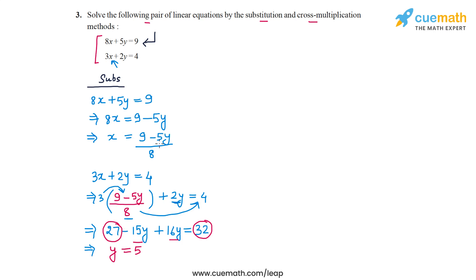Now that I have y equal to 5, I can substitute that into this expression for x, and that will give me the value of x. So what is x? So x will be equal to 9 minus 5y, 5y will be 25, so 9 minus 25 or minus 16 by 8, and that is equal to minus 2.